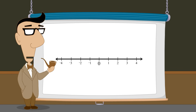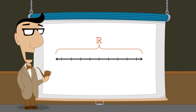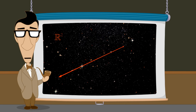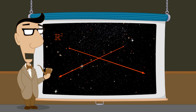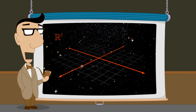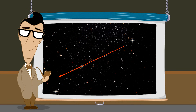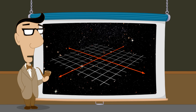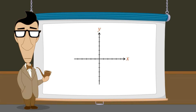We have seen that the number line corresponds to the set of real numbers R. So forming the Cartesian product of the set of real numbers with itself is equivalent to forming the Cartesian product of the number line with itself to form the Cartesian plane. And just as the number line consists of a continuum of points residing in one-dimensional space where each point corresponds to a unique real number, the Cartesian plane consists of a continuum of points residing in two-dimensional space where each point corresponds to a unique ordered pair of real numbers. Using a two-dimensional Cartesian coordinate system we can graphically display sets of ordered pairs as groups of points in this space.